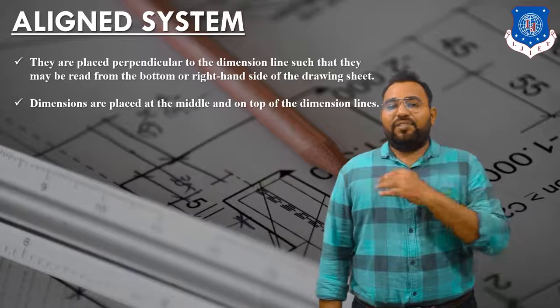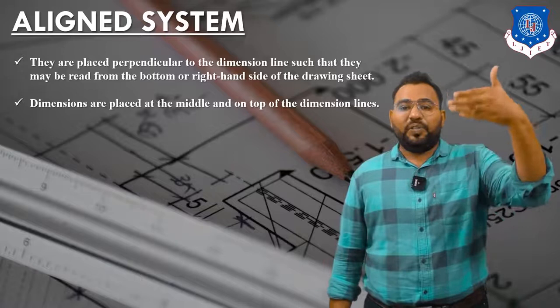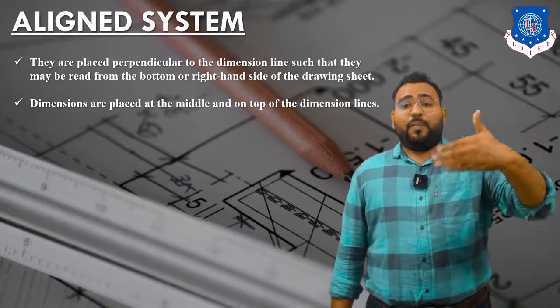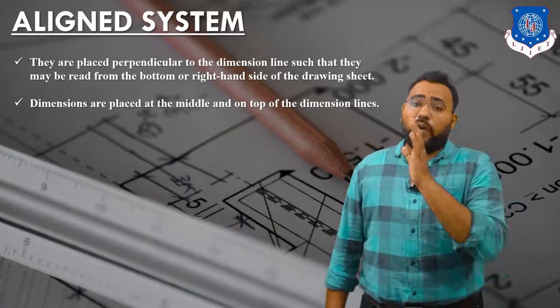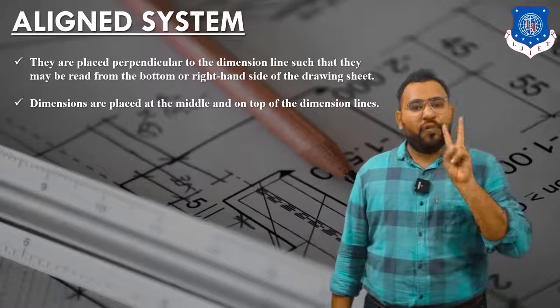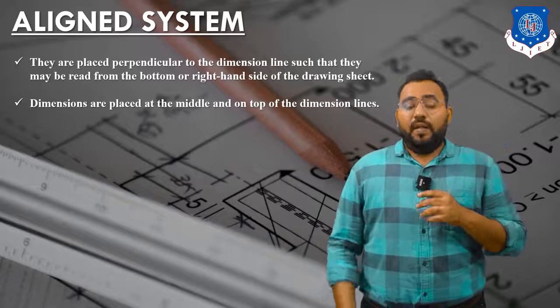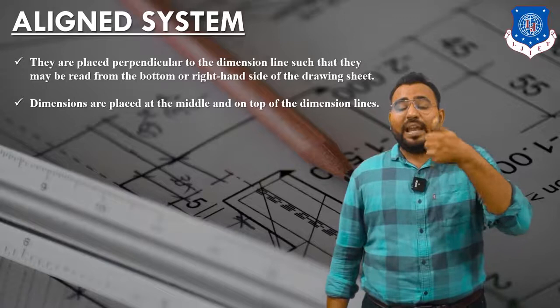First, let us see the aligned system. As per the definition on screen, dimensions are placed perpendicular to the dimension line such that they may be read from the bottom or right-hand side of the drawing sheet. So in aligned system, dimensions can be read either from the bottom side or from the right-hand side. Second, dimensions are placed at the middle and top of the dimension line.